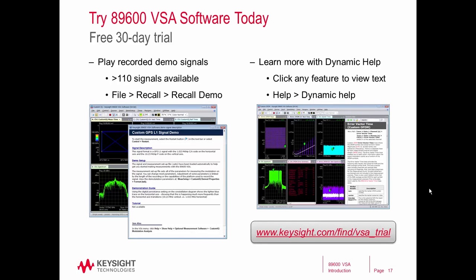If you're interested in learning more about the 89600 VSA software and trying it out, we offer a free 30-day trial license. You can go onto the Keysight website and download the software for free along with a 30-day trial license to make live measurements with any supported Keysight hardware and analyze any signal you want for 30 days for free. Also included in the software download are over 110 demo signals which you can recall to learn more about a specific signal format or see a demo for a given modulation type. Another helpful feature is the dynamic help capability — as you click through menus or settings, the dynamic help updates with help text for that parameter or feature.